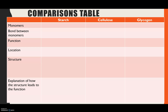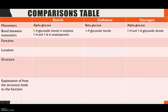Now let's go through the table to check you have all the key information. For monomers: starch and glycogen are made from alpha glucose; cellulose from beta glucose. For bonds: starch has 1 to 4 glycosidic bonds in amylose, and 1 to 4 plus 1 to 6 in amylopectin. Cellulose has only 1 to 4 glycosidic bonds. Glycogen has 1 to 4 and 1 to 6 glycosidic bonds, but notably more 1 to 6 bonds than amylopectin, which is key to explaining the difference in their structures.